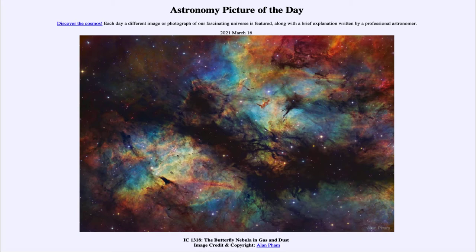Well, it is titled IC 1318, the Butterfly Nebula in Gas and Dust. So what do we see here? Well, this is what is known as the Butterfly Nebula. And what we see, the darker region is the central portion of the butterfly, and then the wings would be the glowing gases stretched out.